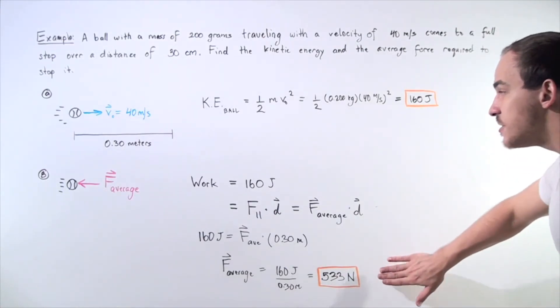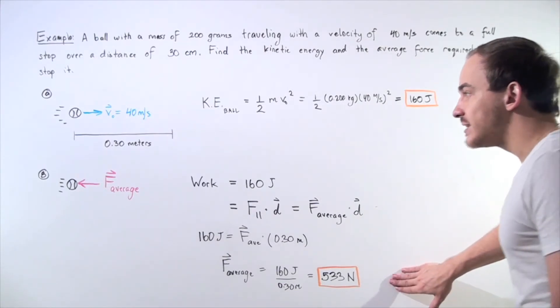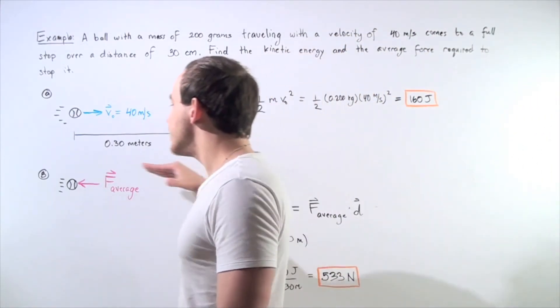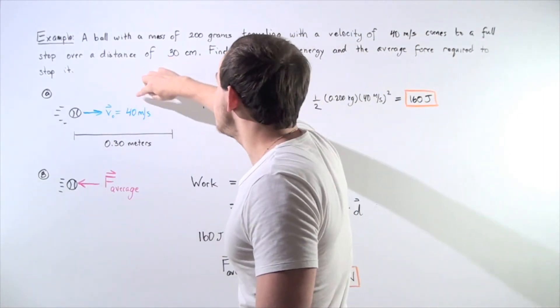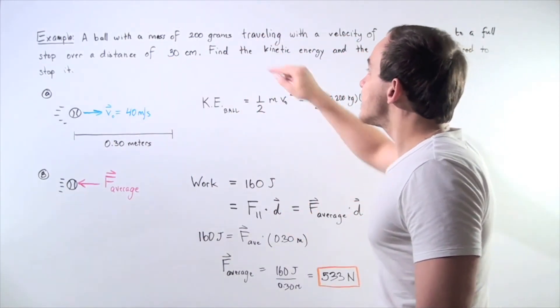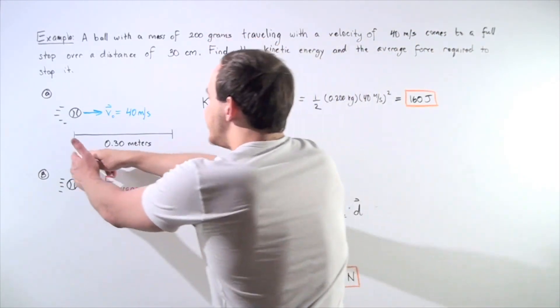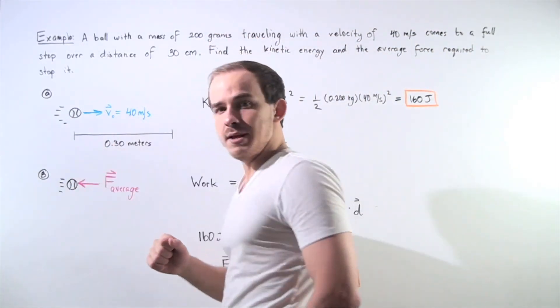So it requires this average force acting on the object pointing in this direction to stop our object that has an initial velocity of this much, a mass of this much over a distance of 0.3 meters.